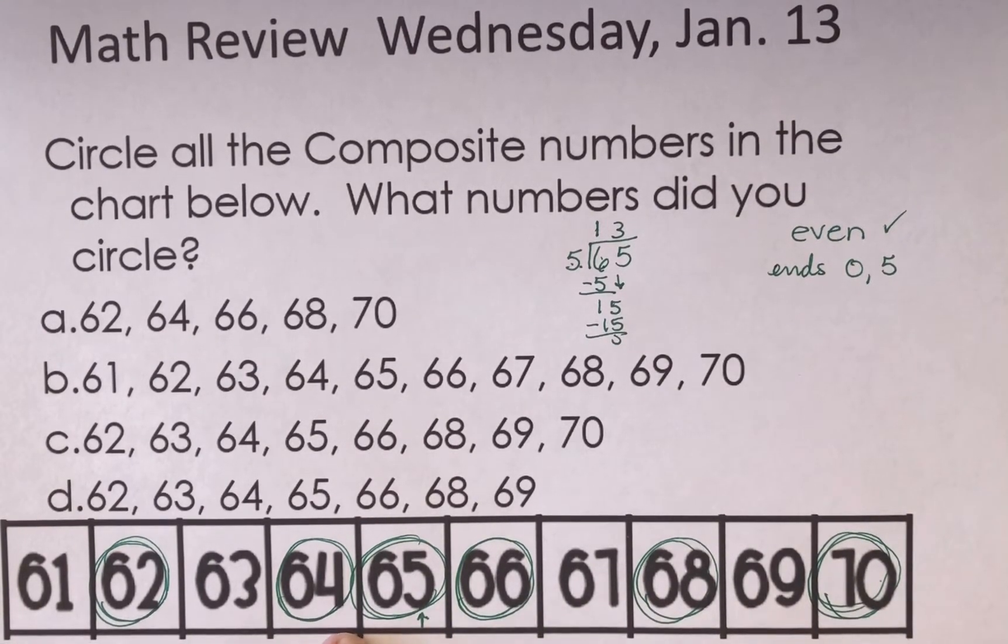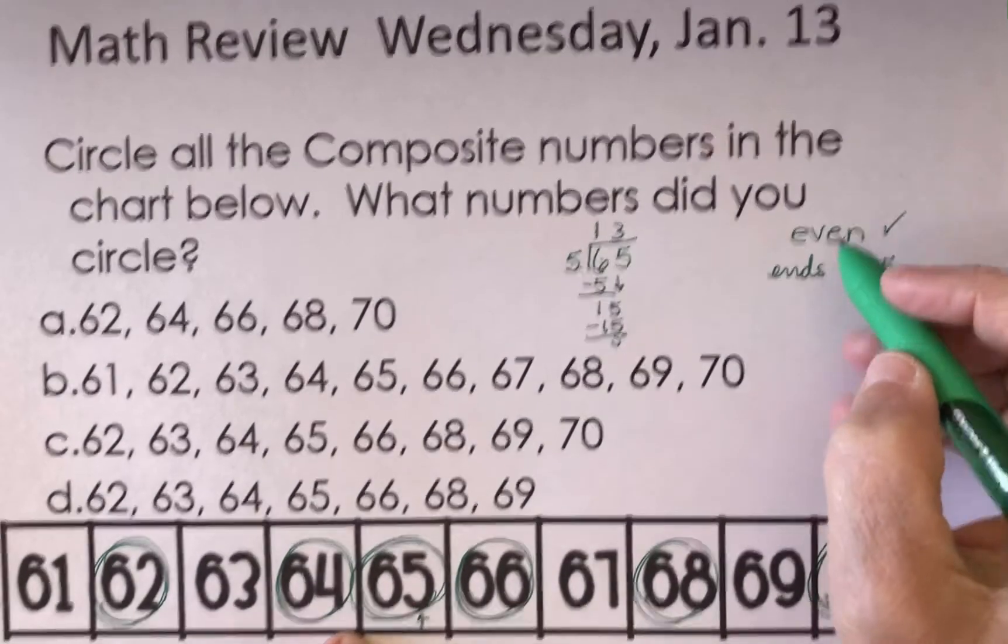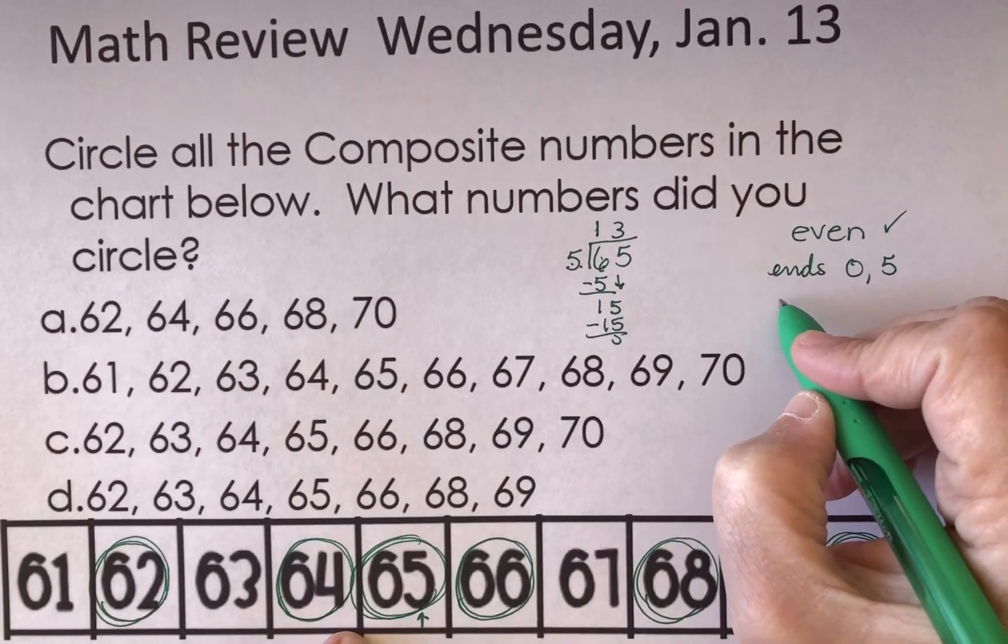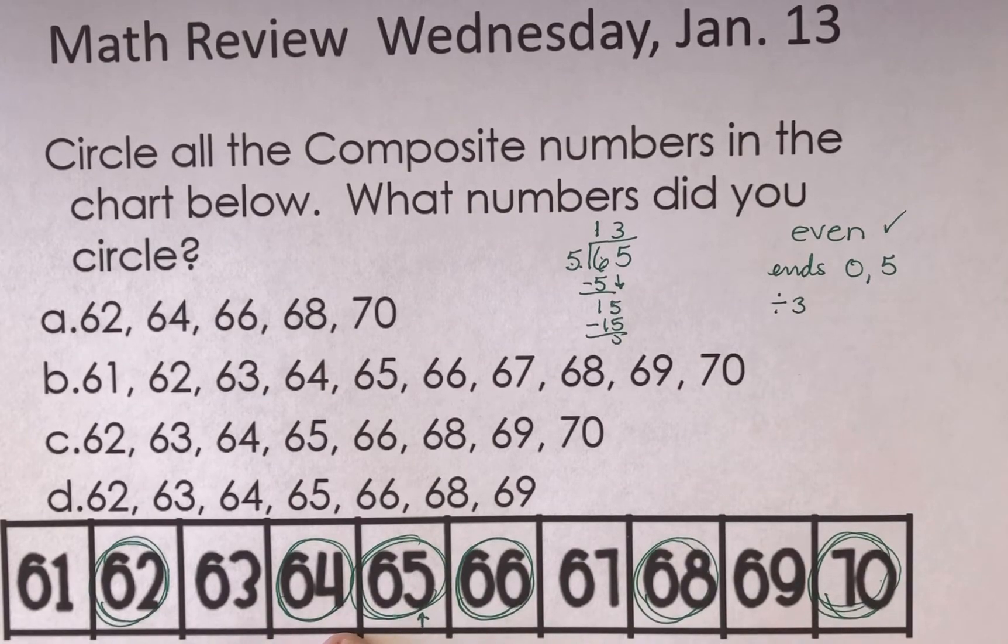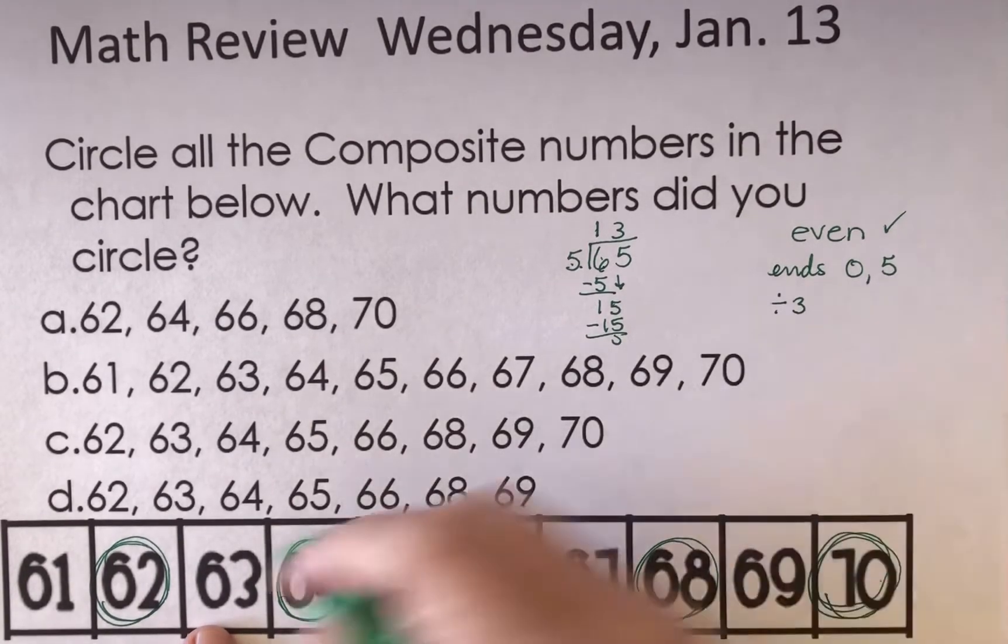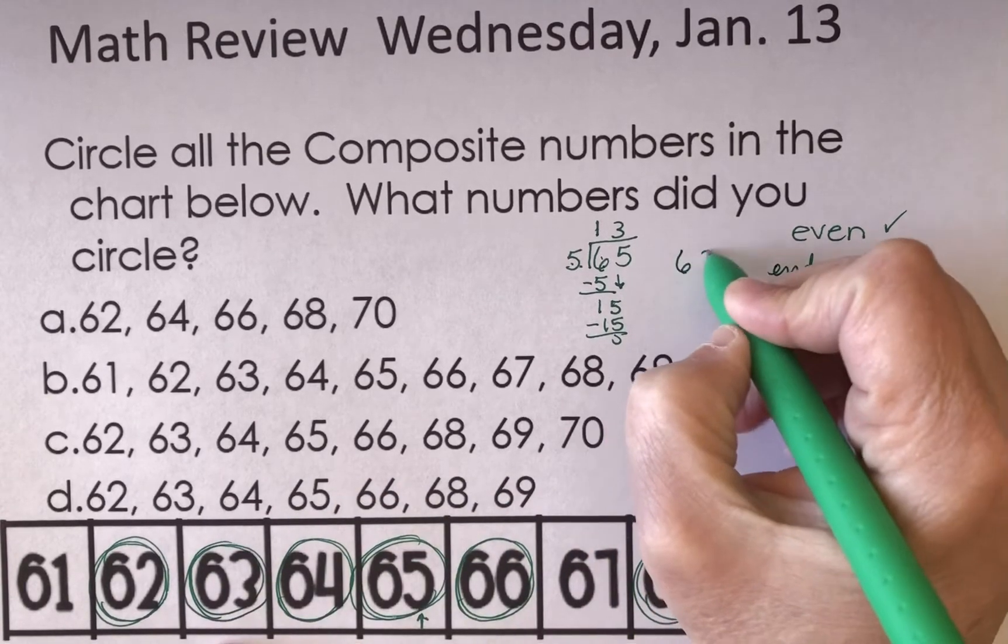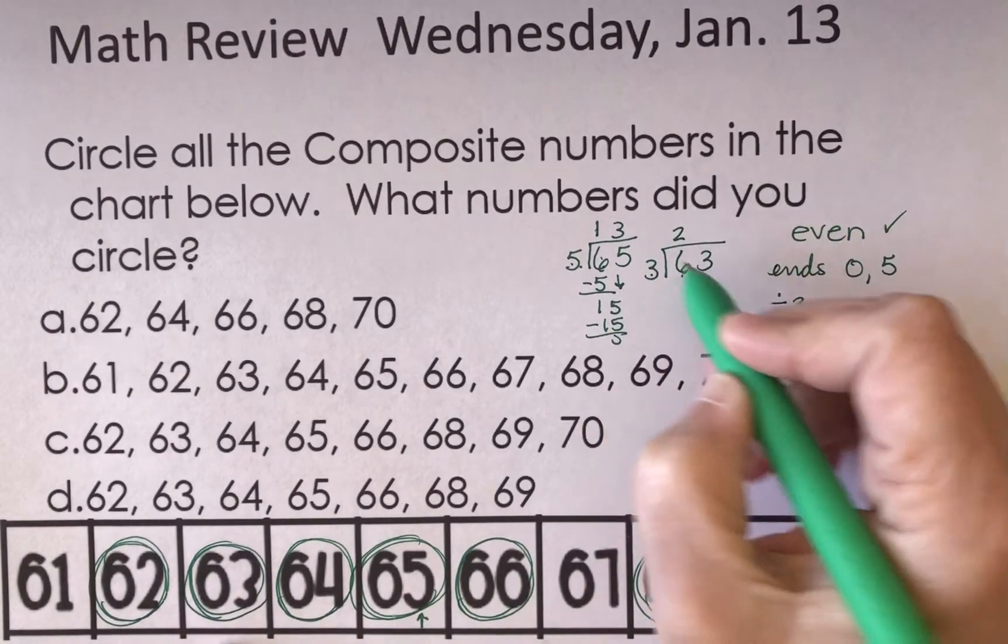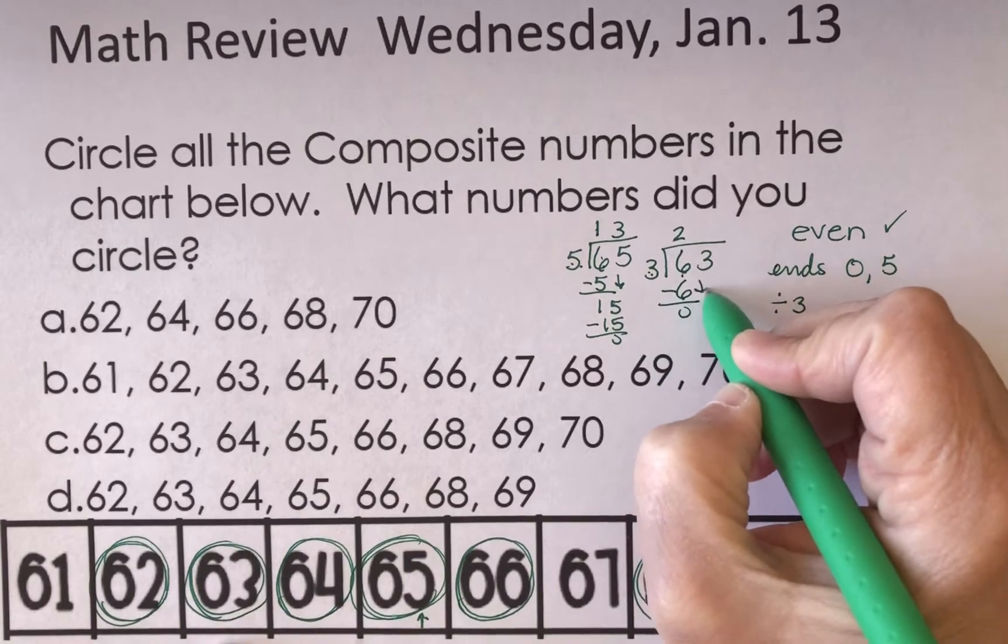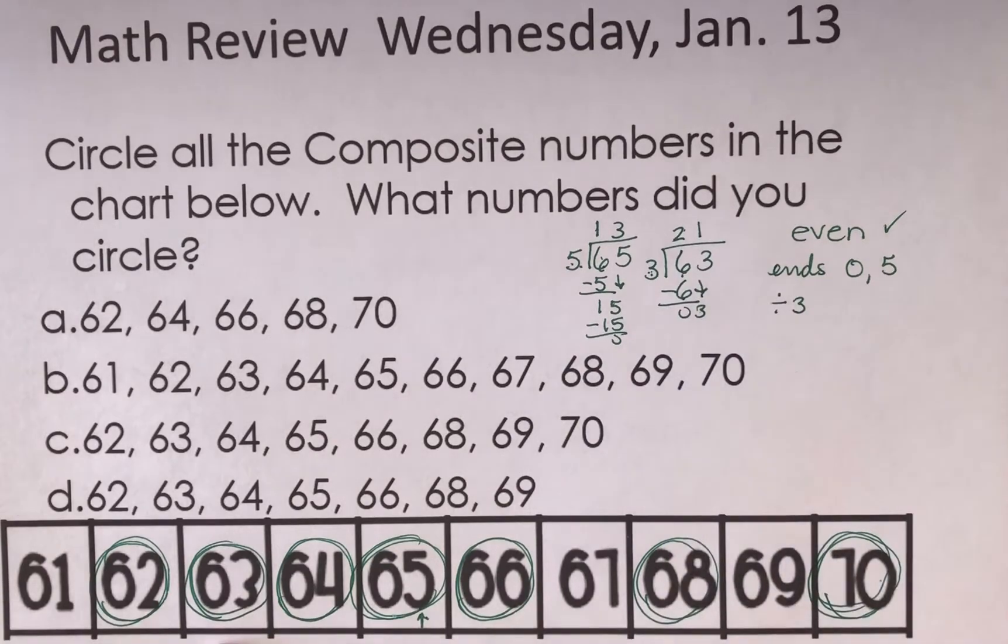Okay, then we look for numbers that are divisible by 3. You can divide it by 3 and you don't have a remainder. All right? 63 is divisible by 3. If I take 63 and I divide it by 3, 3 goes into 6 two times. 2 times 3 is 6. Bring down the 3. 3 goes into 3 one time.